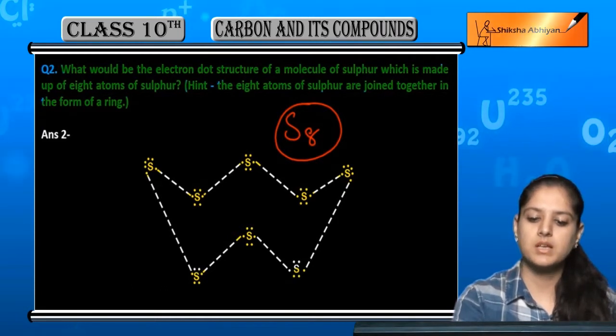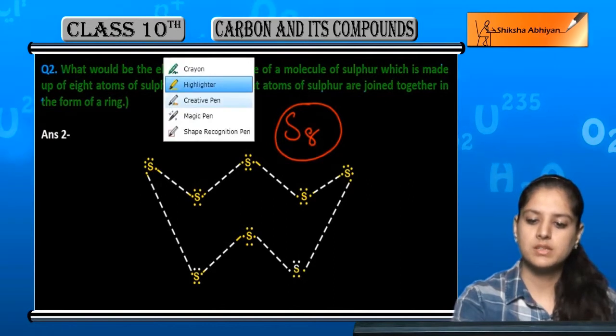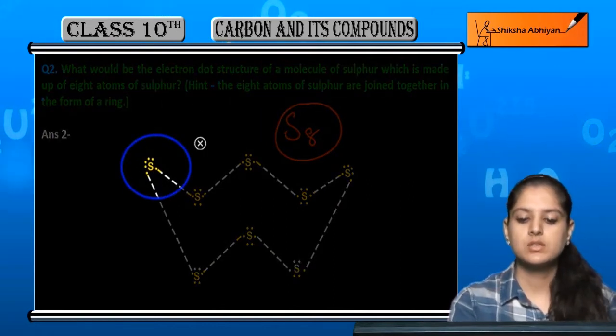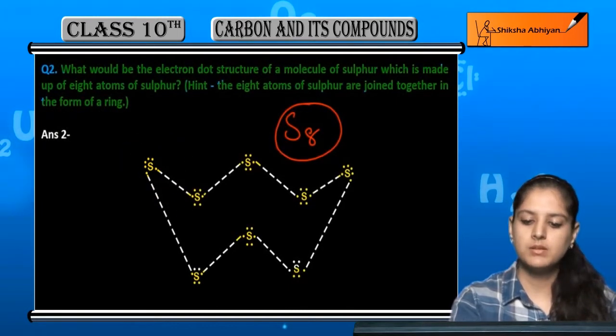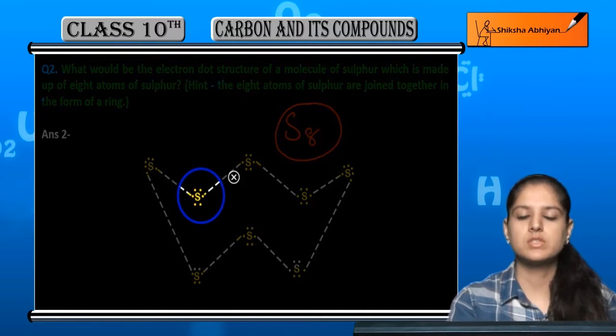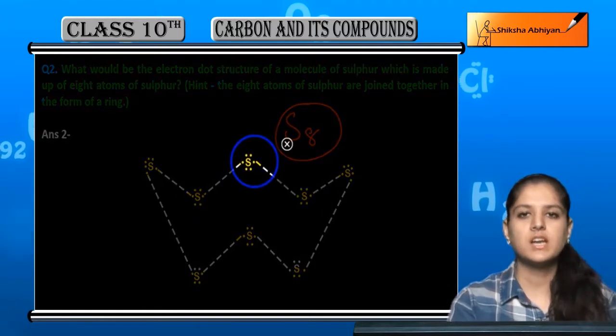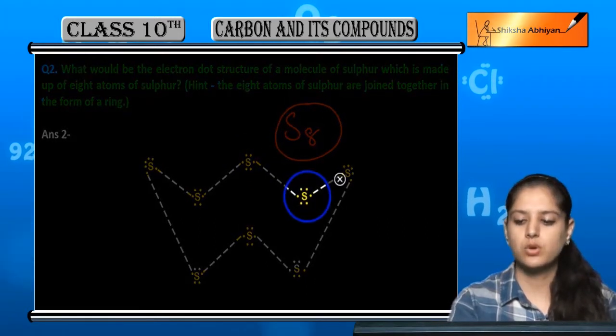Abh har ek sulfur atom ke paas outermost six electrons hoote hai. Toh aap dekh sakti hai har ek sulfur atom ke baahar hamne six dots bana di jis se ki ye represent ho raha hai ki in mein six outermost electrons present hai. So you can see eight ke eight sulfur atoms ke baahar hamne six dots bana hai jo ki six valence electrons ko represent kar raha hai.